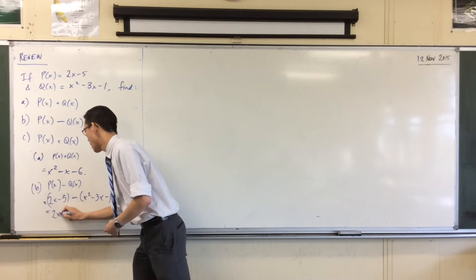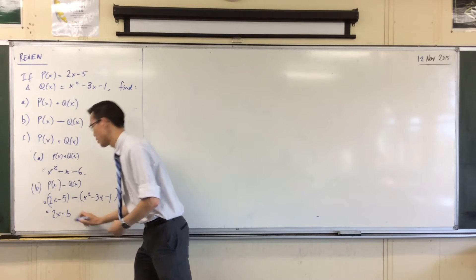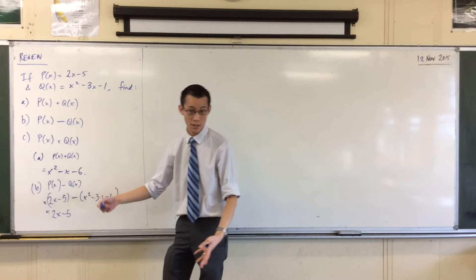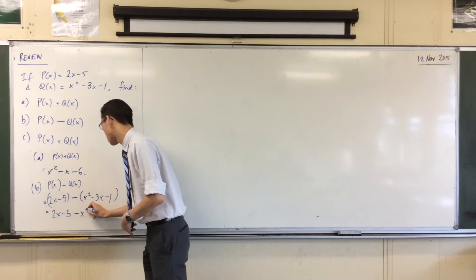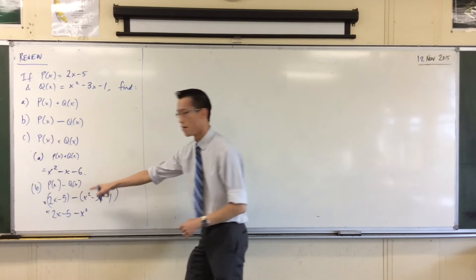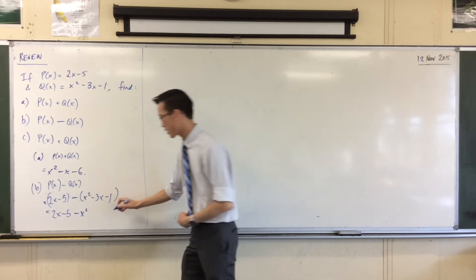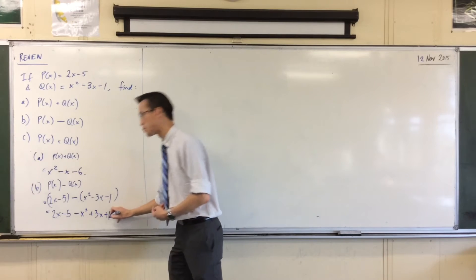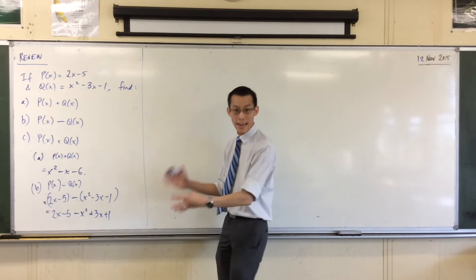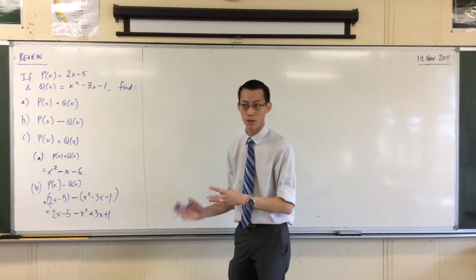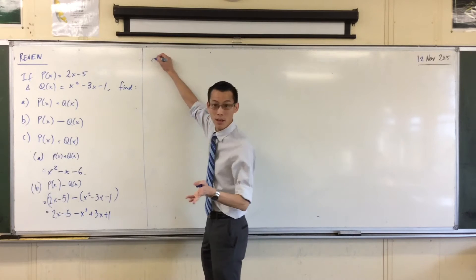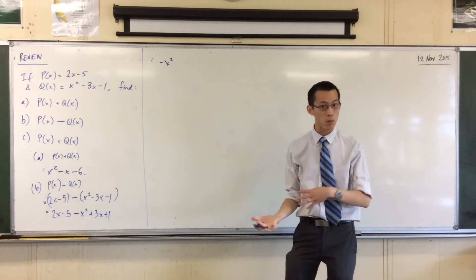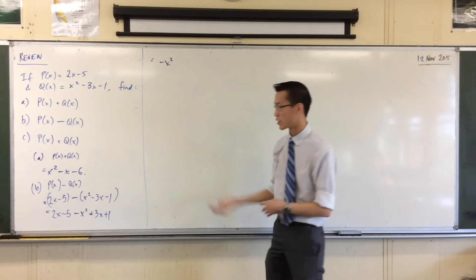Now that I've written that out and done a straight substitution, that's just less to keep in my head. I can now expand my brackets. The one out the front doesn't do anything, but here I've got all these double negatives to watch out for. So: minus X squared, take away negative 3X is plus 3X, and take away negative 1 is plus 1. Now I can go through it term by term and collect like terms properly. There's negative 1 lots of X squared.